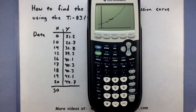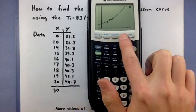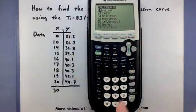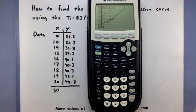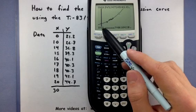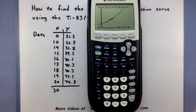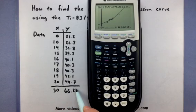And the way I can do that is I'd go into my calc feature. So second, calc. And my first one says value. So I'll press enter. And then I could feed it this prediction of 30. And the calculator would give me the corresponding Y value from the model. And I can make predictions about other X values as well.